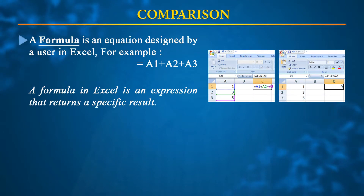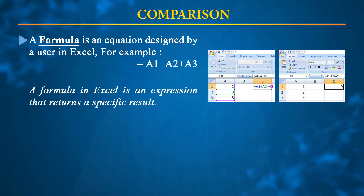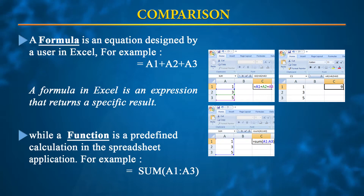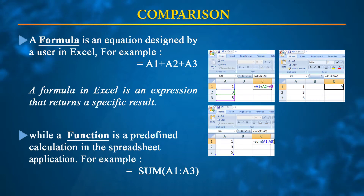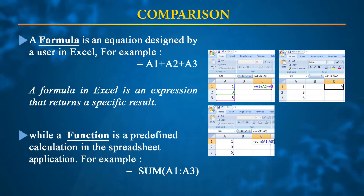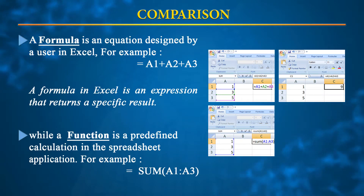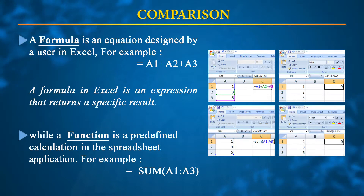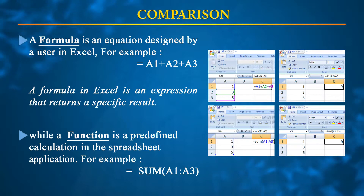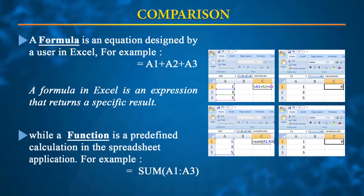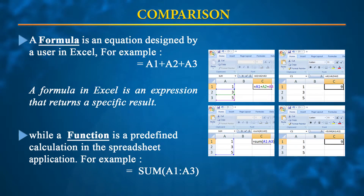The same addition can be done using the SUM function. In cell C1, you type =SUM(A1:A3), addressing the range from A1 to A3. When you press Enter, the sum of the numbers in that range is reflected in C1, which is 9. SUM is predefined — it is a function where the arguments passed are A1 to A3, and it returns the sum of those values.